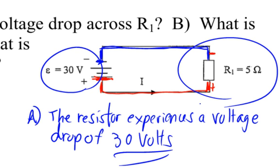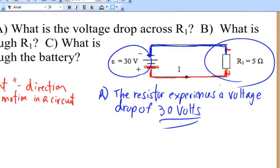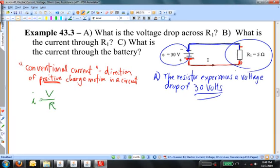Part B: What is the current through the resistor? We're going to solve this using Ohm's Law. The current is going to be the voltage drop across the resistor — the 30 volts that we just found in Part A — divided by the resistance of the resistor, which is 5 ohms. And I get 6 amperes. In other words, 6 coulombs per second flow through this resistor.